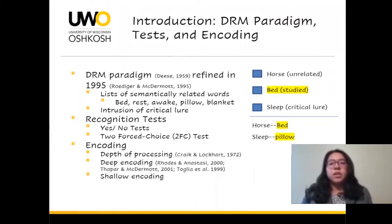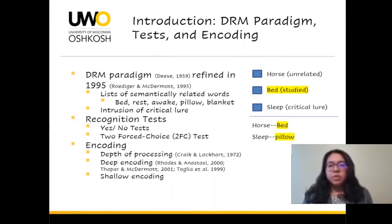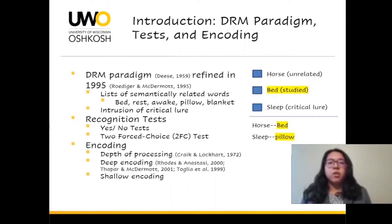When it comes to recognition tests, there are two common tests. The first is called a yes-no test, and you can see a little example on the right where horse would be the unrelated word, bed is the studied word, and then sleep is the critical lure.